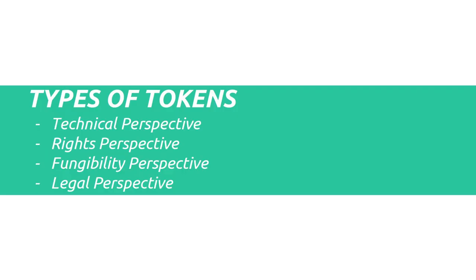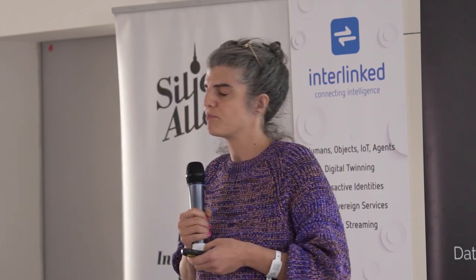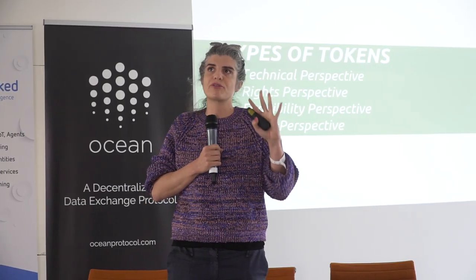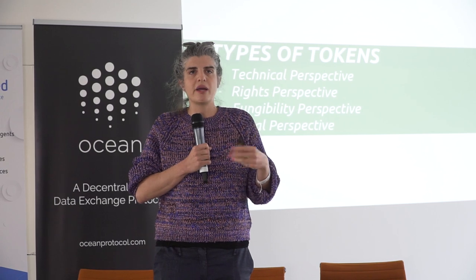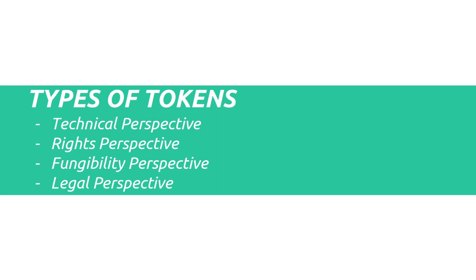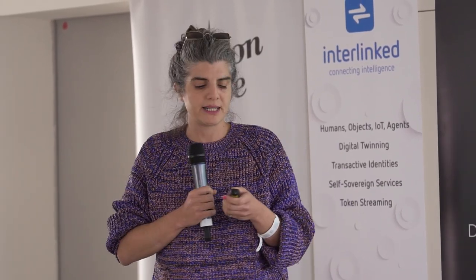Before we start to model a token, what kind of token are we actually talking about? When we get to token taxonomy it gets messy, because there is no general taxonomy yet. We have all these buzzwords flying around and nobody really knows what a utility token is. We still don't have standardized vocabulary when we talk about tokens. We try to focus on four different perspectives: technical, rights, fungibility, and legal.